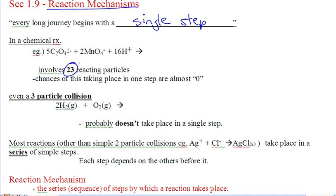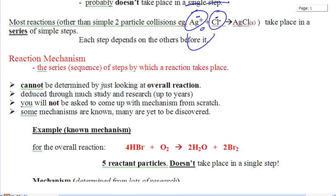There may be one kind of reaction, like this one, that has two ions smashing together. The chances of that taking place in one step is probable. But the majority of them are going to take place in a series of steps. And those series of steps are called mechanisms.